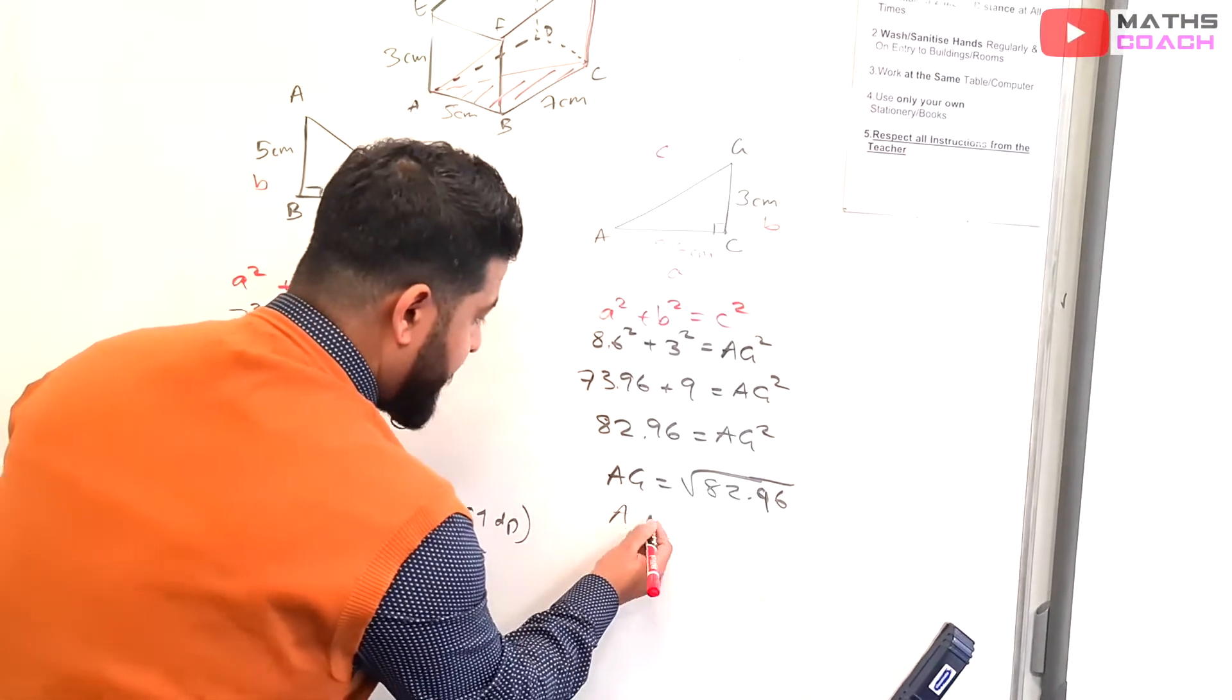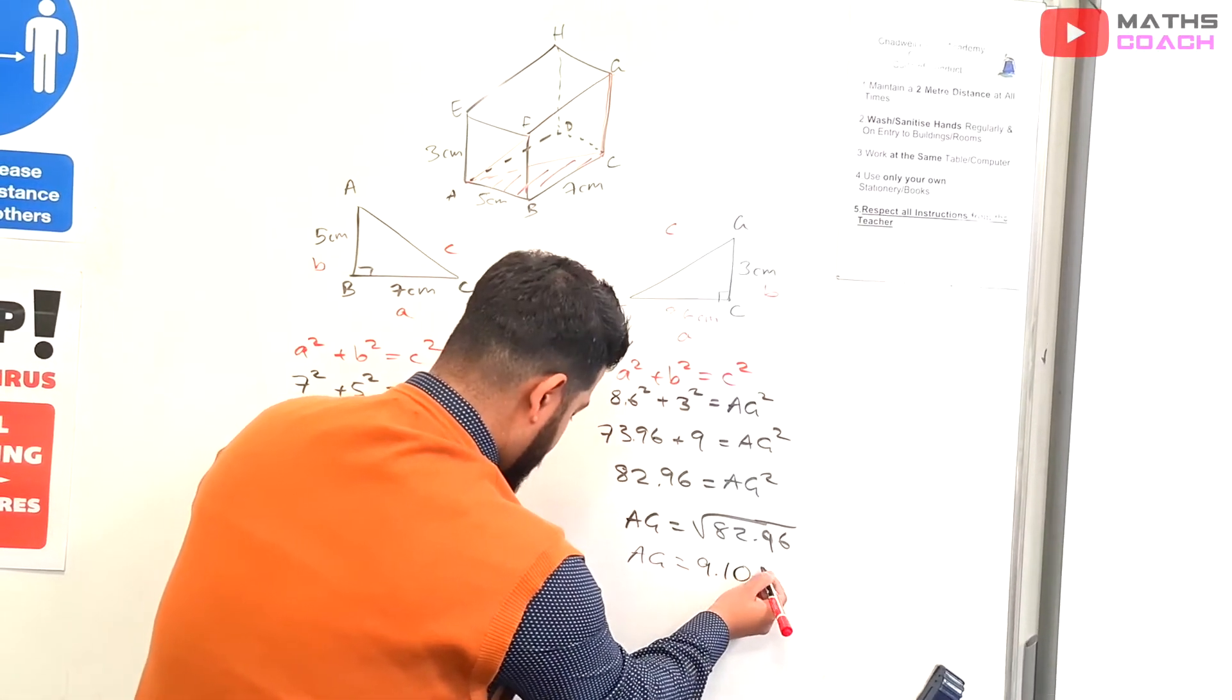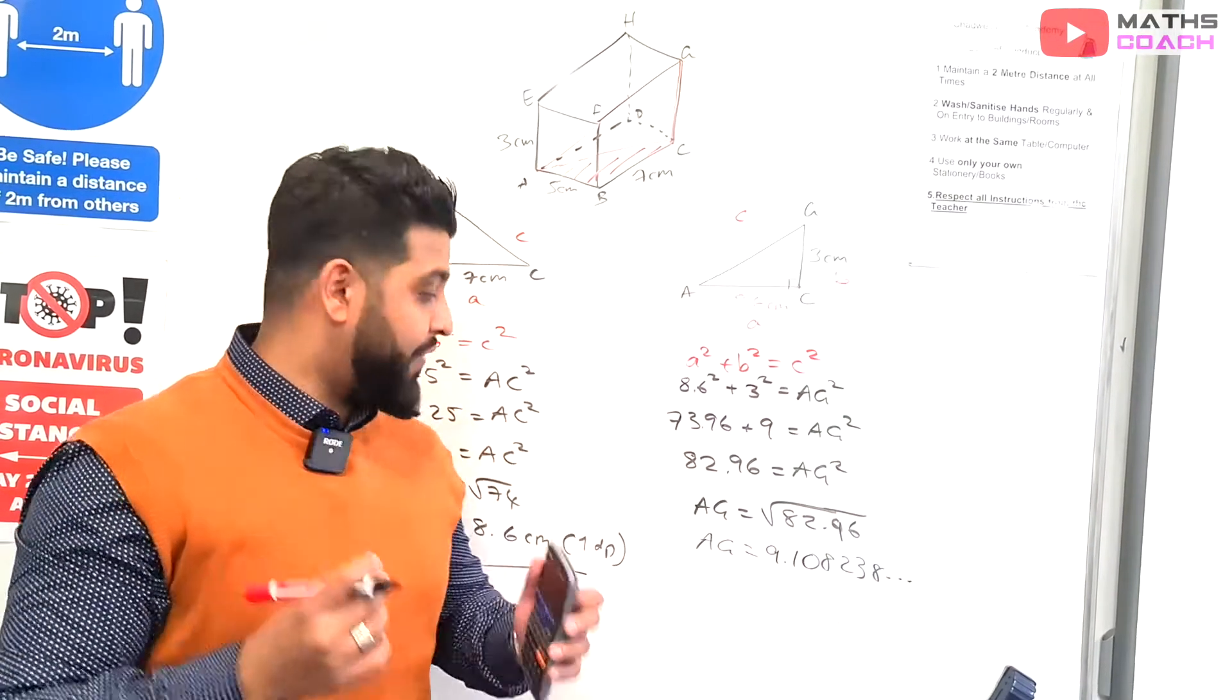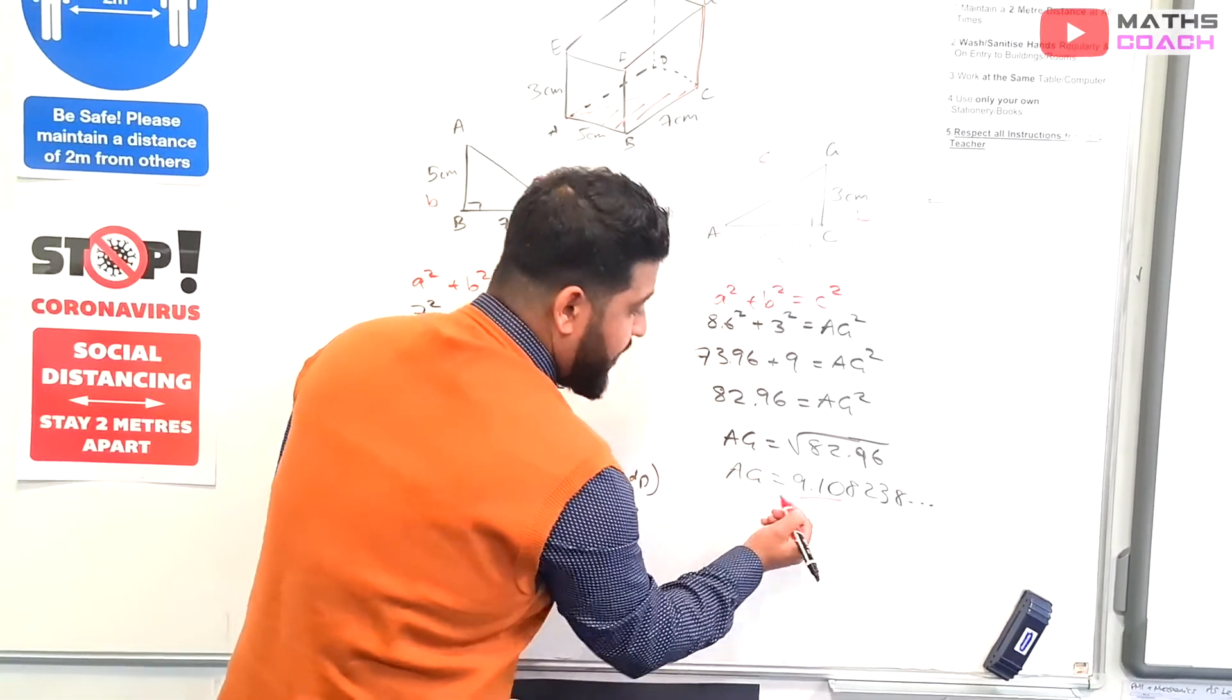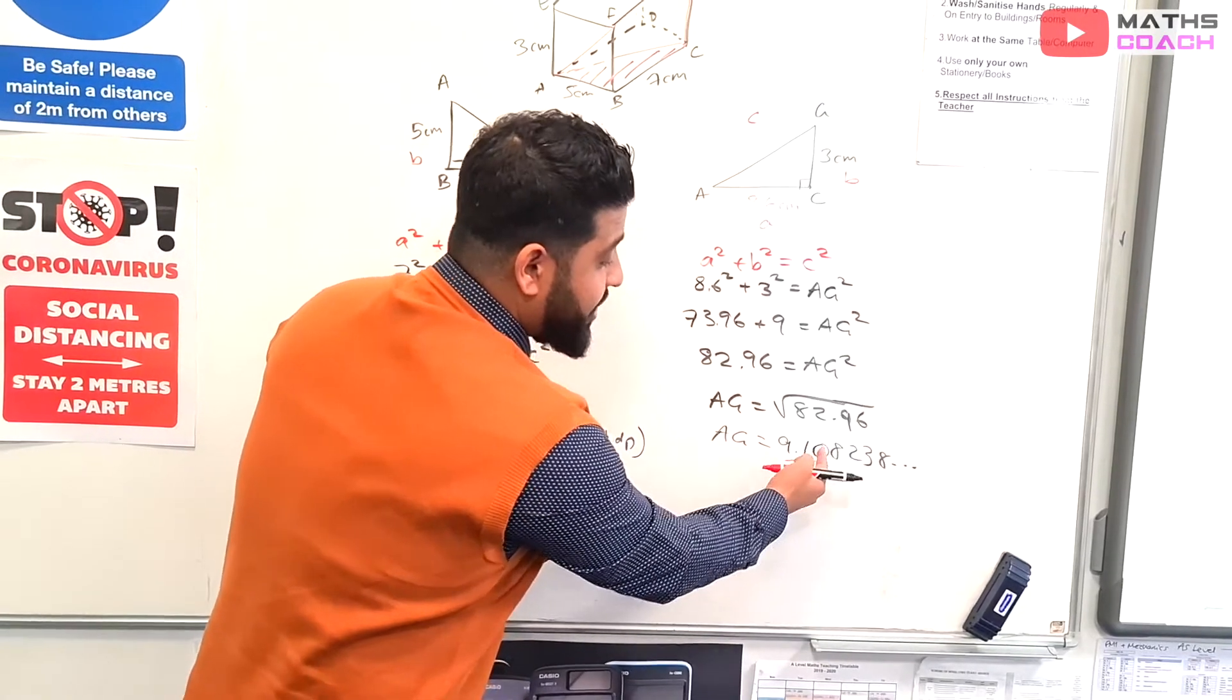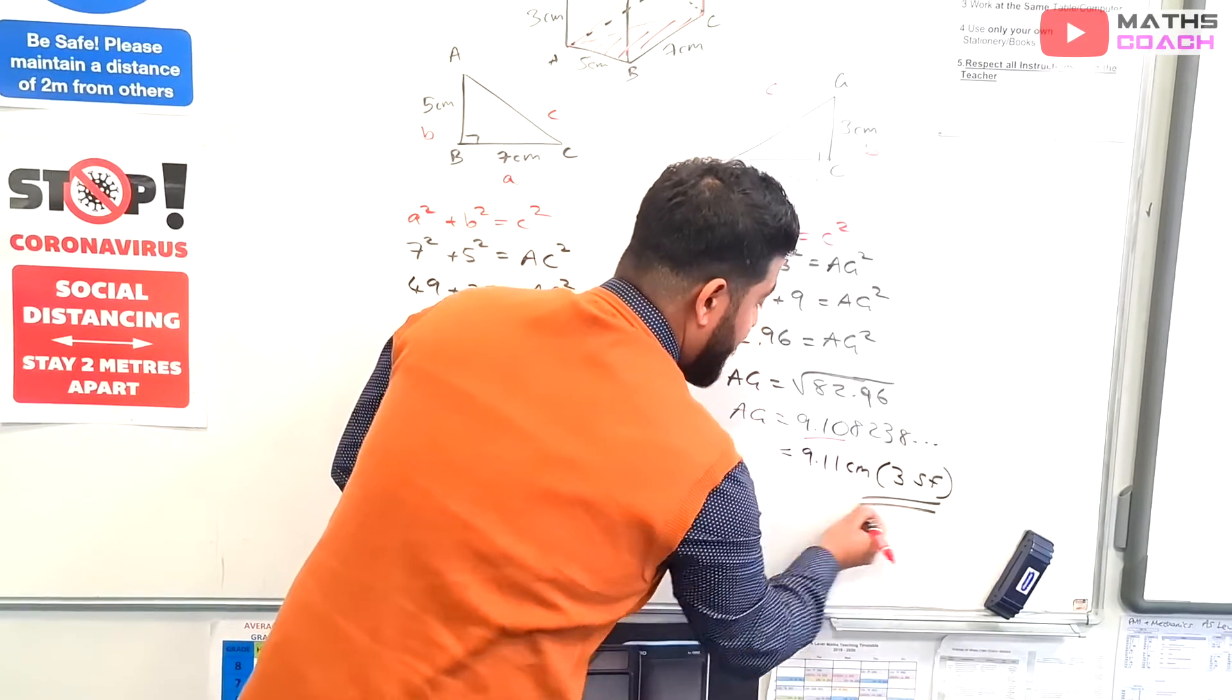So we want AG. We're going to square root the answer. So AG would be, on our calculators, the square root of 82.96 is 9.108238... Now, if you go back to the question, the question did say to give your answer to 3 significant figures. So if you have a look at this, our significant figures, we've got 1, 2, 3. This is our 3 significant figures. But because the number next to the last significant figure, the 0, the number next to that is an 8, we are going to increase this by 1. So our final answer is going to be 9.11 centimeters. And that is 3 significant figures.